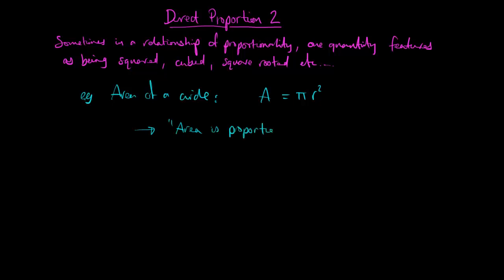We say the area is proportional to the radius squared and that's because it's in this form A equals k times r squared and it happens that the constant proportionality in this case k is equal to pi.